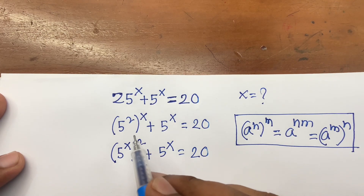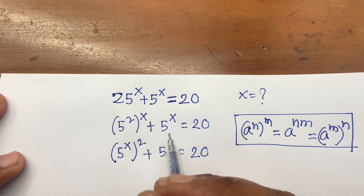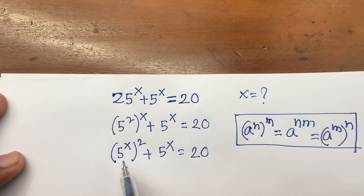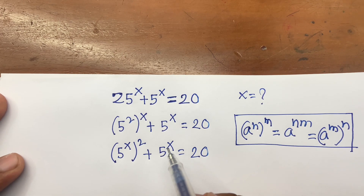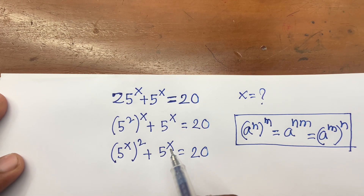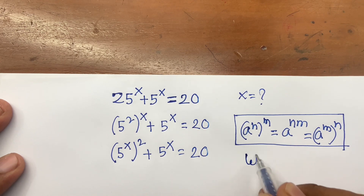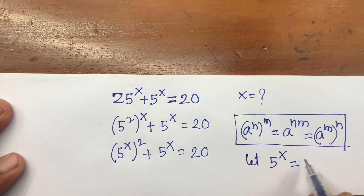I just moved the exponent inside the bracket. Now here we have 5^x and 5^x — so 5^x is common. Let 5 to the power x equal y.